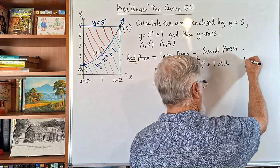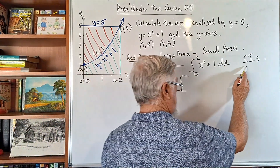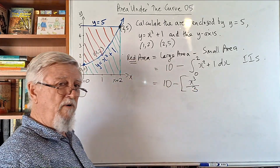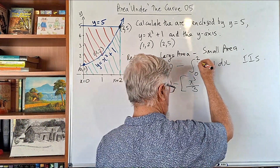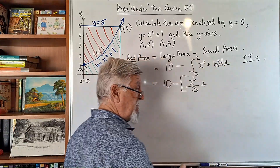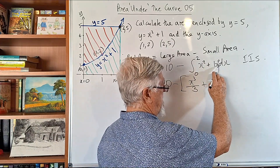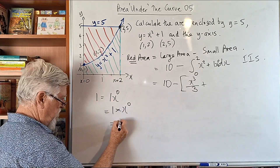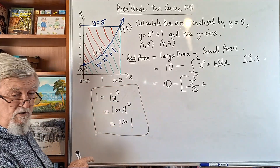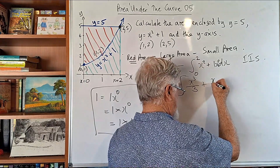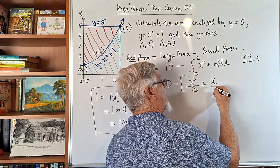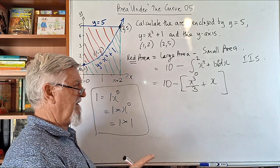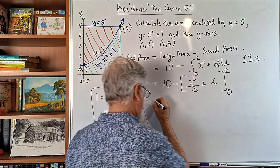Let's look at the calculation. The rule for integration is: increase the power by 1 and divide by the new power. So x squared becomes x cubed over 3. For the constant 1 — written as x to the 0 — increasing the power gives x to the 1 over 1, which is just x. We don't need the constant of integration when substituting values because they cancel. So we have the integral from 0 to 2 of (x squared plus 1), giving square brackets x cubed over 3 plus x, evaluated from 0 to 2.